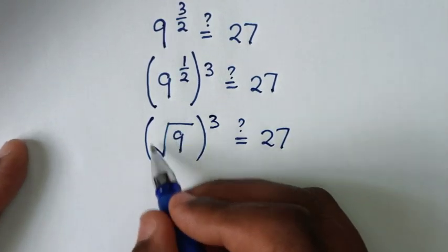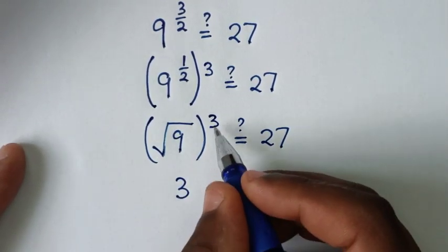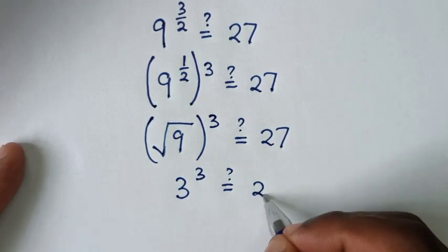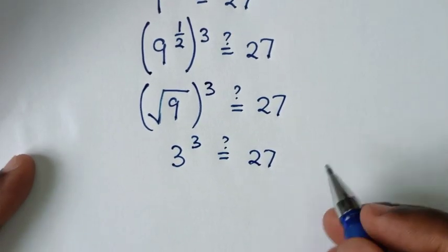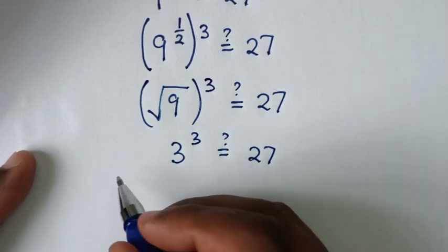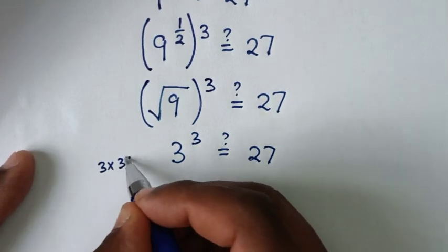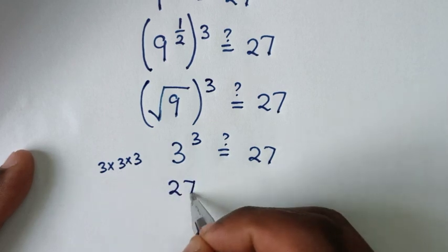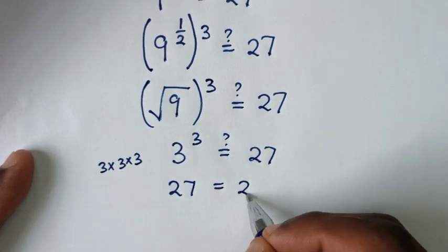Then from square root of 9, it is 3 power of this 3 is it equal to this 27. Then from 3 power of 3, it is 3 times 3 times 3. Whereas 3 times 3 is 9. 9 times 3 is 27 is equal to 27.